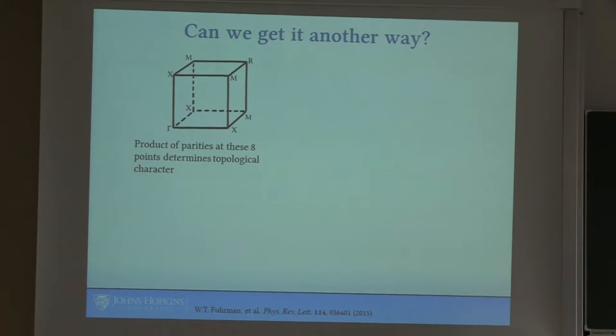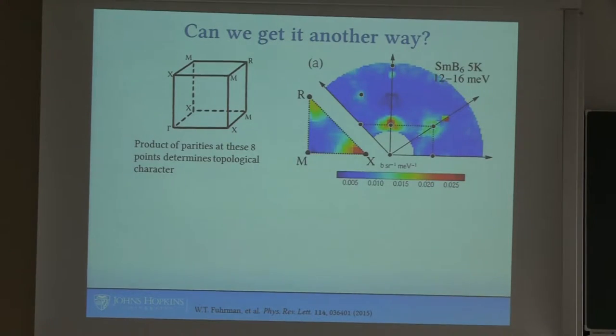So here's how that problem was tackled. Here are the eight time reversal invariant momenta in a cubic Brillouin zone. You've got one gamma, three Xs, three Ms, and an R. And it's the product of the occupied states of the parities at these eight points that actually tell you the topological, whether it's topological or not. And so now here is some single crystal neutron scattering data. So inelastic neutron scattering, you're measuring the energy transfer to the sample with neutrons. So it's an inelastic scattering measurement.